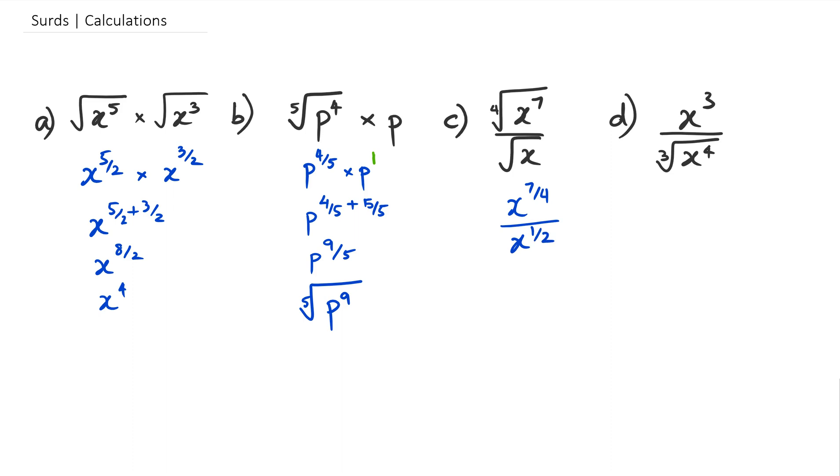So now, because the bases are the same, we've got to subtract the powers. So we're going to get 7 over 4 minus half. Because they don't have the same denominator, and I want to make the same denominator, I'm going to multiply the numerator by 2 and the denominator by 2 so that the denominator ends up being 4. So I'm going to get x to the power of 7 over 4 minus 2 over 4. Which means, now we can say this as 7 minus 2 is 5, and we're going to get 5 over 4. And we could write this as x to the power of 5 and the fourth root of it.